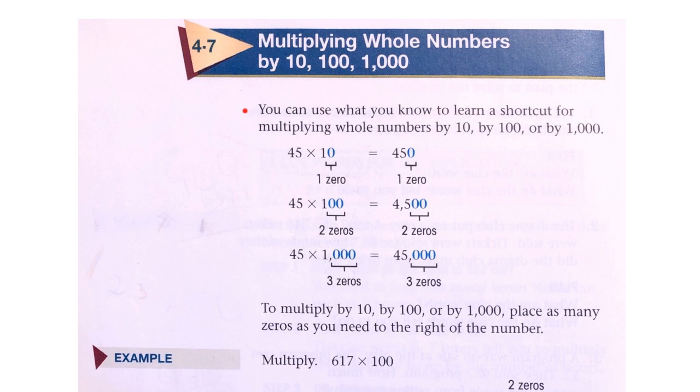You can use what you know to learn a shortcut for multiplying whole numbers by 10, by 100, or by 1000. 45 times 10: 10 has one zero, so then 45 times 10 equals 45 with one more zero.